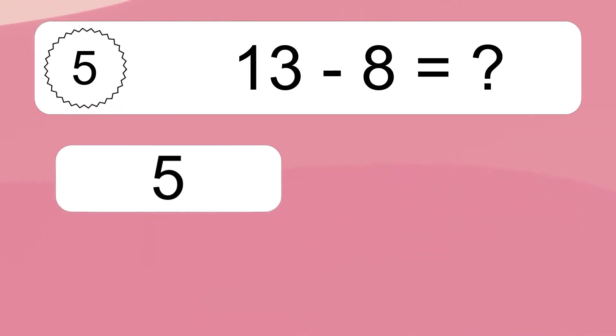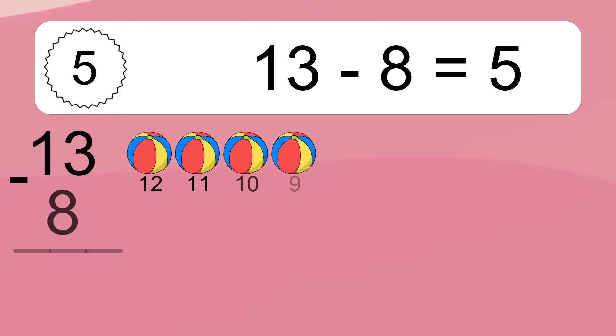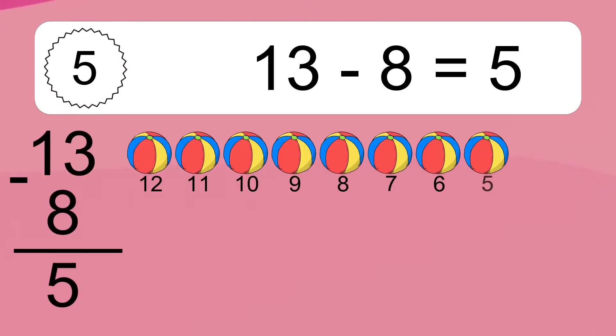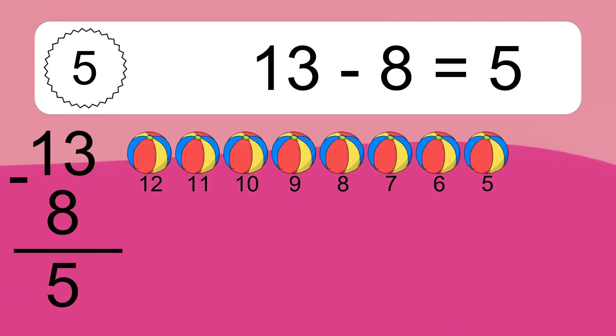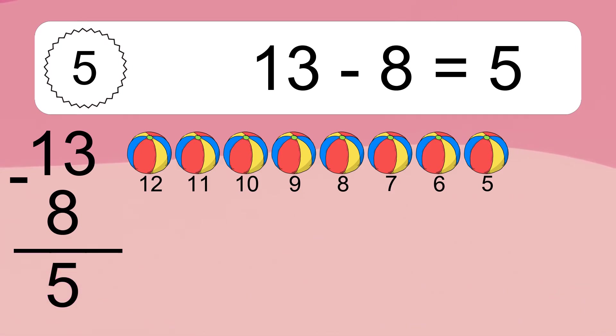13 minus 8 equals what? 13 minus 8 equals 5. Let's count it: 12, 11, 10, 9, 8, 7, 6, 5.